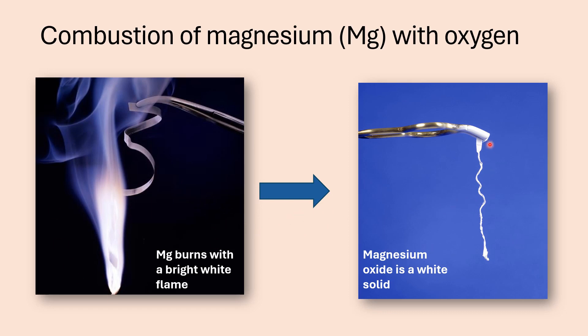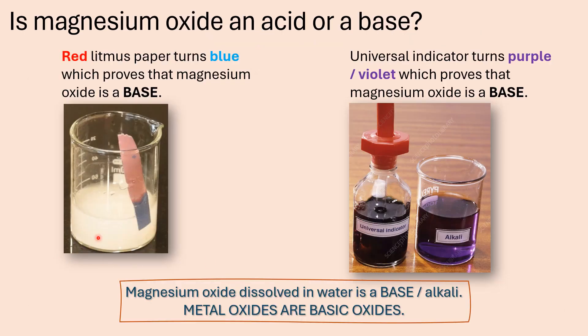After the combustion reaction, what is left is a white solid. If you touch that white solid, it will break down and form a powder. If you take this magnesium oxide — this white solid — and dissolve it in water and test it with an indicator, you will find that red litmus paper turns blue. That proves to us that magnesium oxide is a base. You can also use universal indicator, which normally turns violet or purple. That also proves that magnesium oxide is a base. So the general rule is that when a metal oxide is dissolved in water, it is basic — metal oxides are basic oxides.